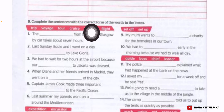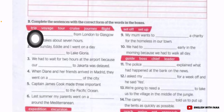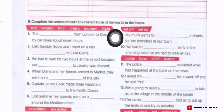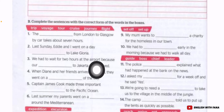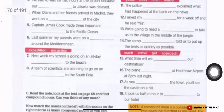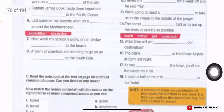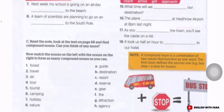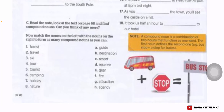For Exercise B, complete the sentences with the correct form of the words in the box. The answers are provided in the red box — fill in the blanks accordingly from number one to number 18.